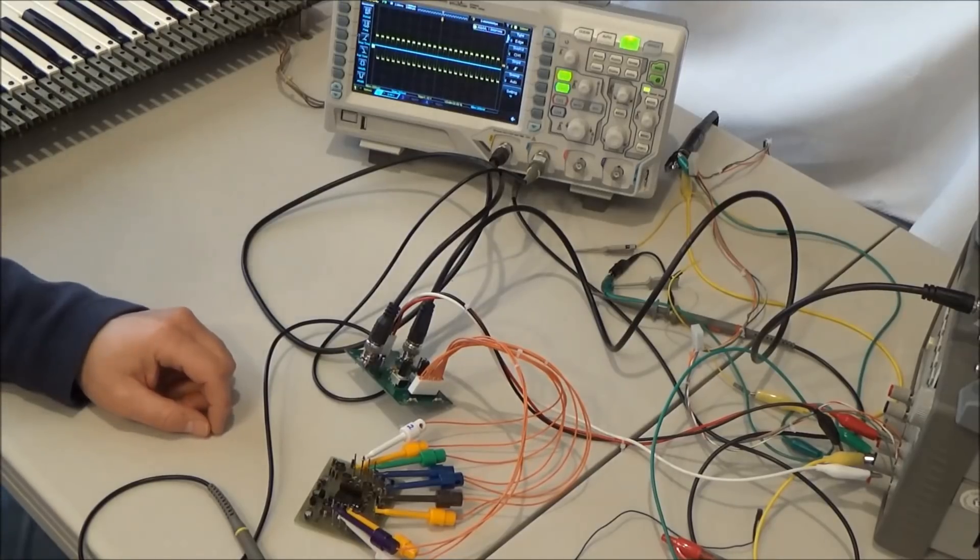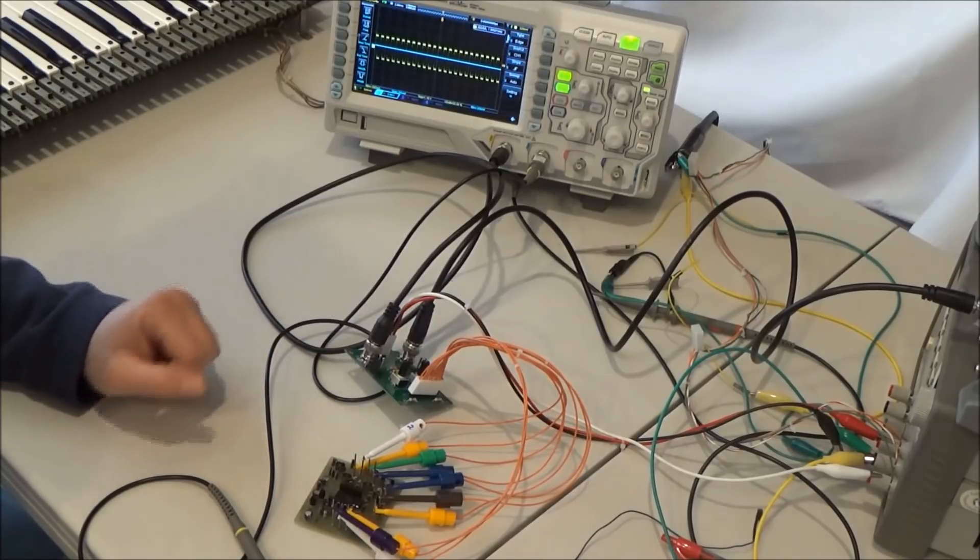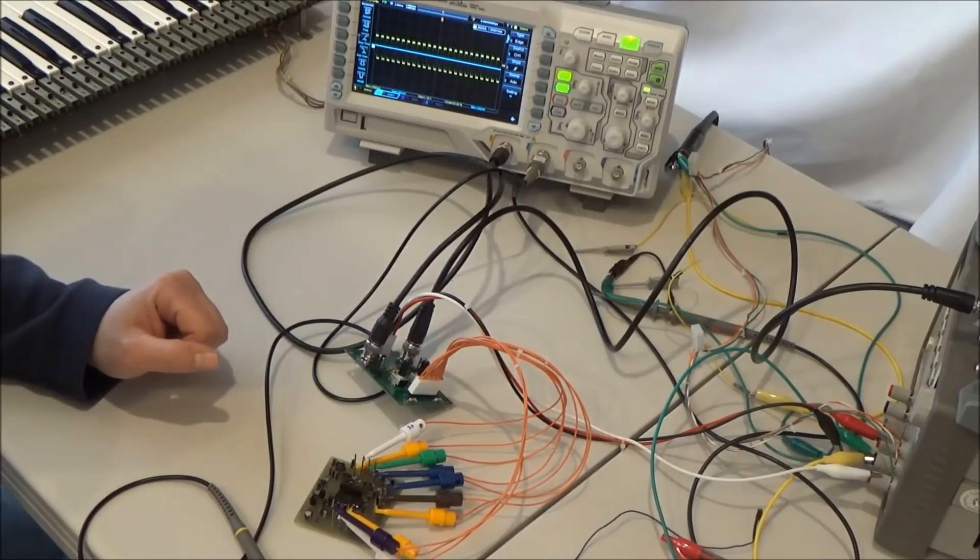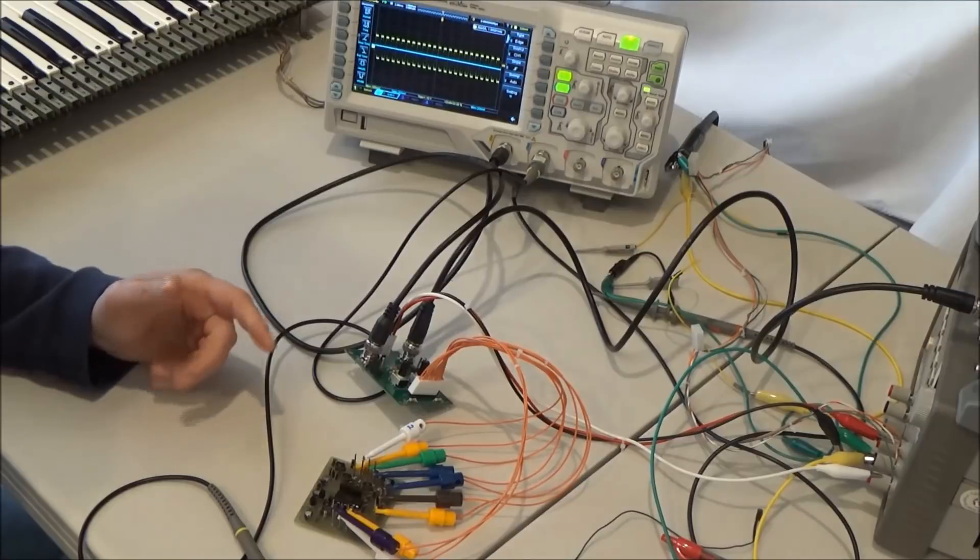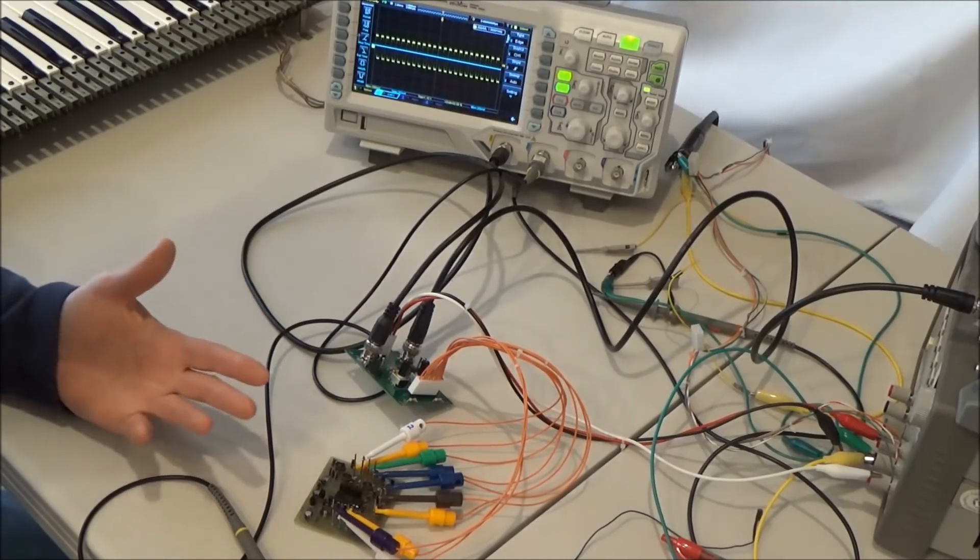My normal process of troubleshooting is first to verify the power rails are correct and then dive into the area where I most suspect the problem to be. So we're going to be checking the minus 13 and minus 6 volt power rails that get generated by the filter. And then since the filter isn't responding correctly to the control voltage being fed we'll want to check out the exponential converter.